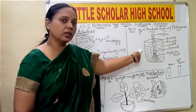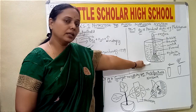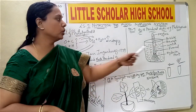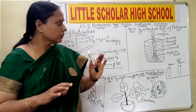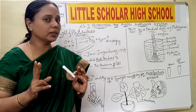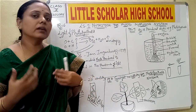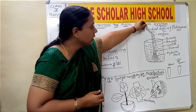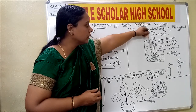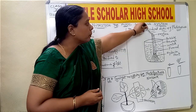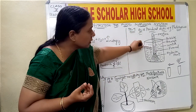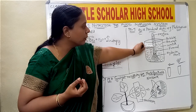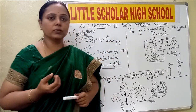To repeat: take a beaker filled with water, a funnel with hydrilla plant, and a test tube also filled with water. Carefully invert the test tube on the funnel stem. Leave one setup in the dark and one in the light. After 3-4 hours, you will observe that the water level slowly comes down, and at the top of the inverted test tube, some gas accumulates. You can see bubbles arising from the hydrilla plant, and all these get accumulated at that portion of the test tube.